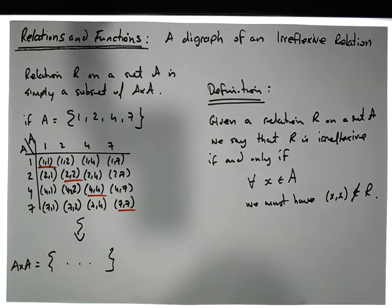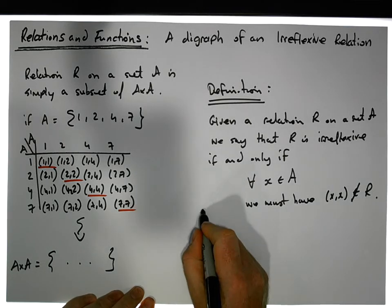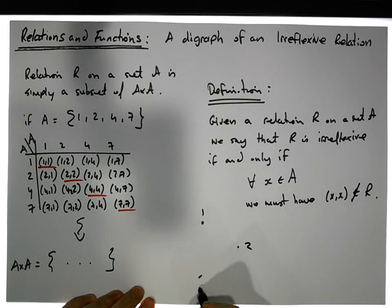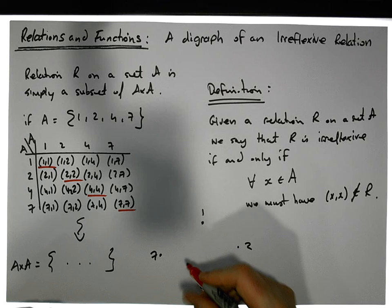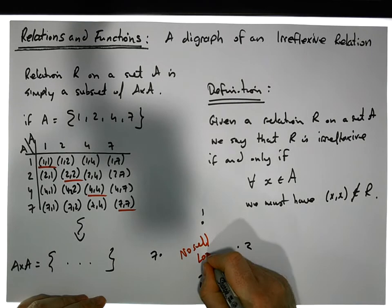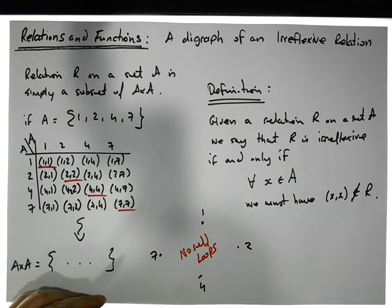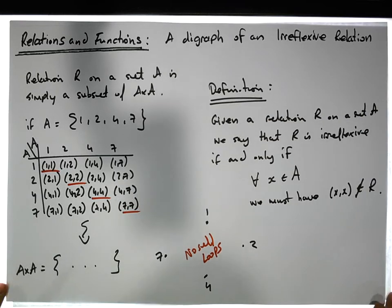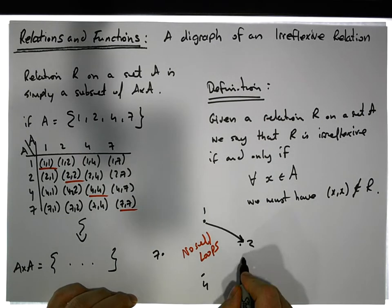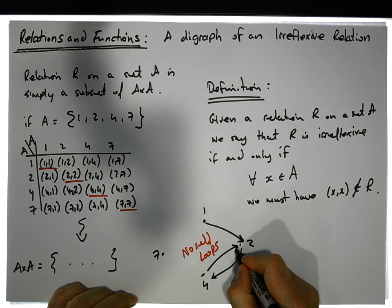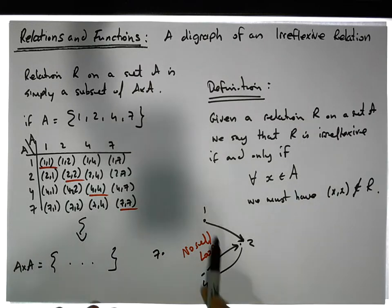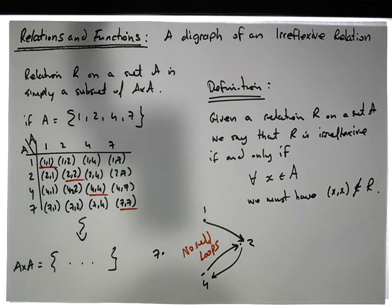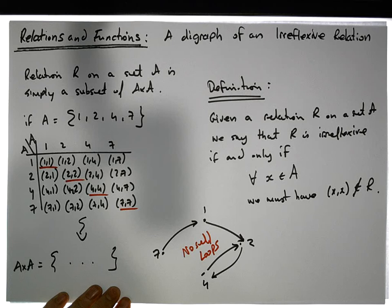From a digraph perspective, none of the self-referencing pairs can be in the relation. With nodes 1, 2, 4, and 7, no self-loops are allowed. So this relation that takes 1 to 2, 2 to 4, and 4 to 2 is irreflexive because there are no self-loops.